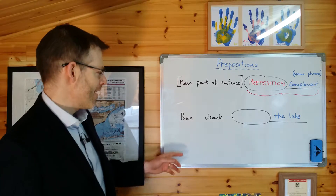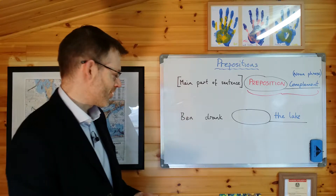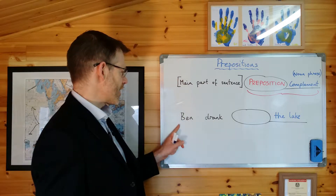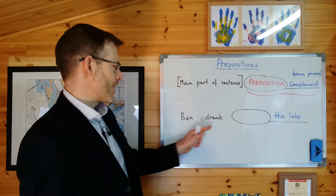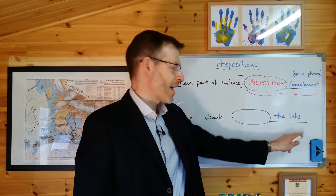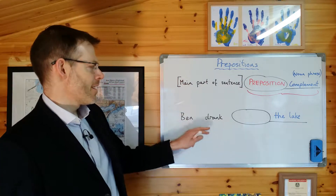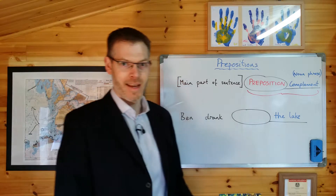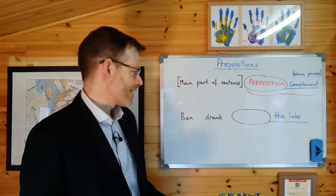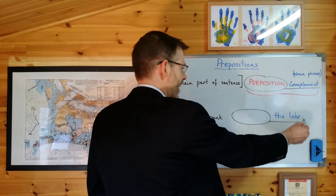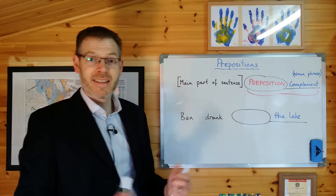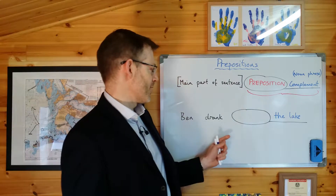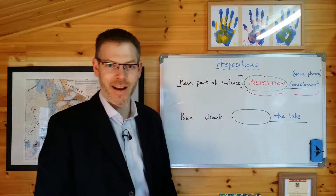Let's take a really simple sentence: Ben drank the lake. Let's parse some of the key words. The verb is 'drank' — it's a past tense verb in English. The subject is 'Ben', and in English that's determined by word order. 'The lake' is the object. So if you were writing this in Greek, Ben would be in the nominative and the lake would be in the accusative. Now, there is no preposition in this sentence as it stands. The relationship between 'the lake' and the main part of the sentence is determined simply by the fact that it's in the place where the object would normally be — it's the direct object of 'Ben drank'.